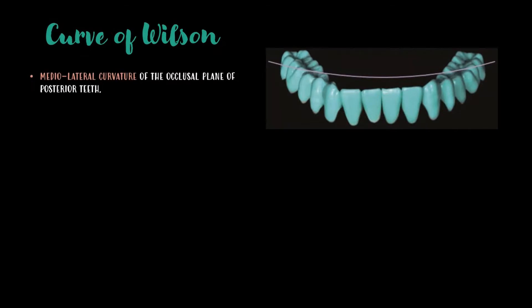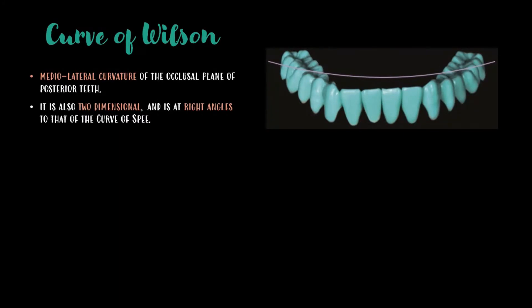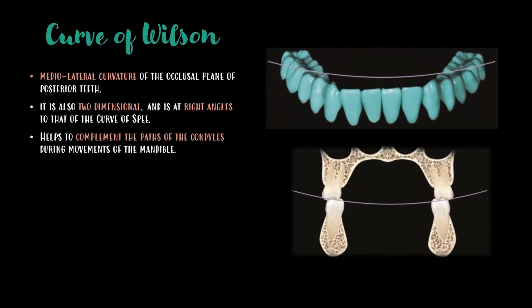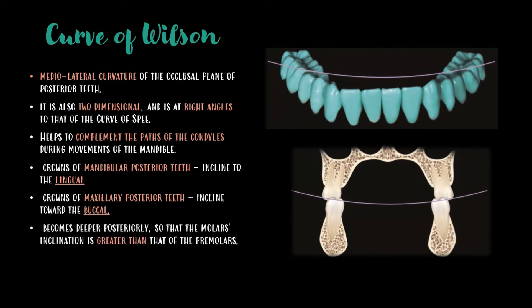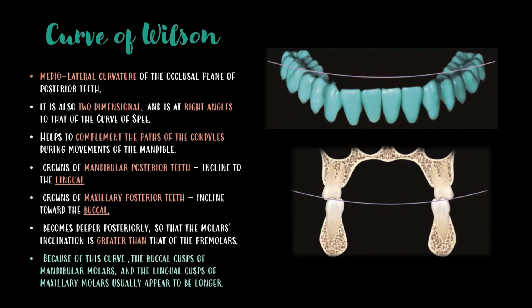The curve of Wilson is the medial-lateral curvature of the occlusal plane of posterior teeth. It is also two-dimensional and is at right angles to that of the curve of Spee. It helps to complement the paths of the condyles during the movements of the mandible. The crowns of mandibular posterior teeth are inclined lingually and the crowns of maxillary posterior teeth are inclined buccally. It becomes deeper posteriorly so that the molars' inclination is greater than that of the premolars. Because of this curve, the buccal cusps of mandibular molars and the lingual cusps of the maxillary molars usually appear to be longer.